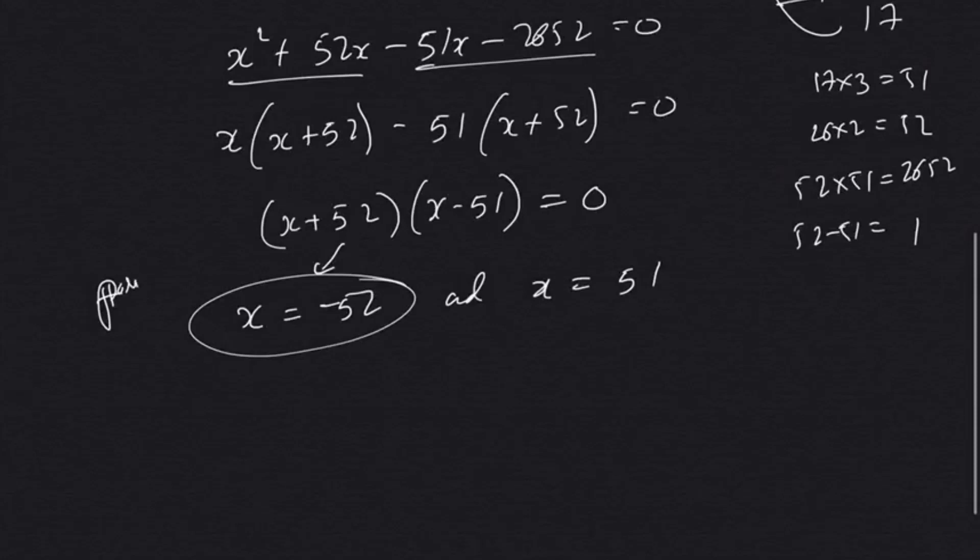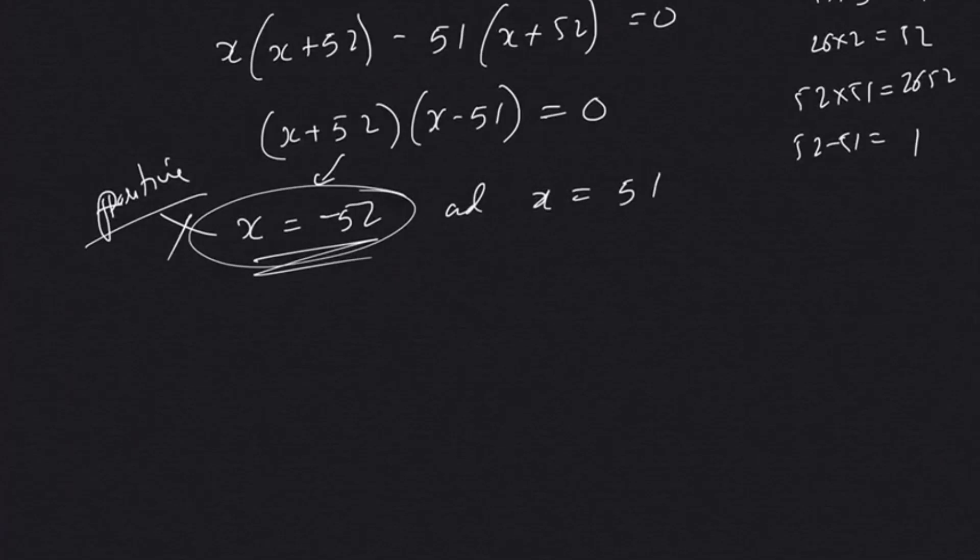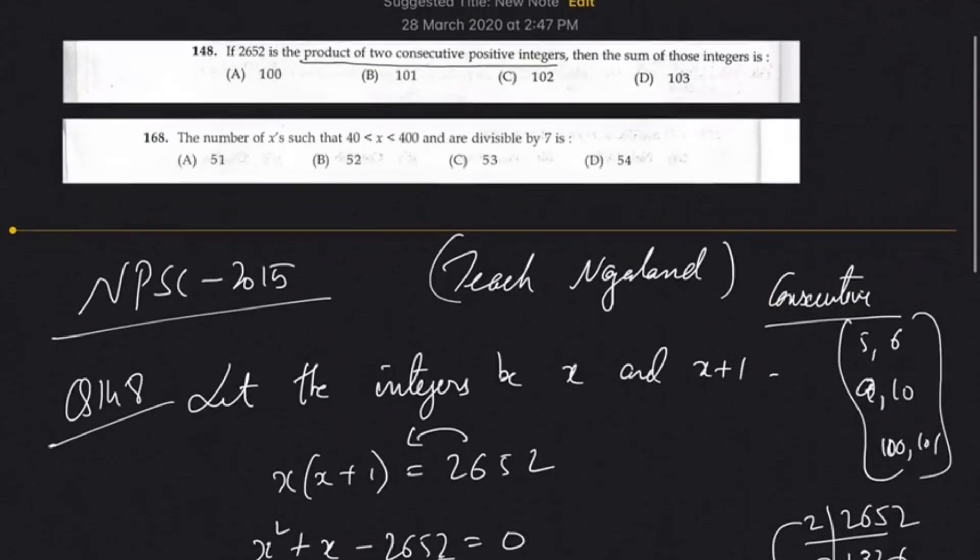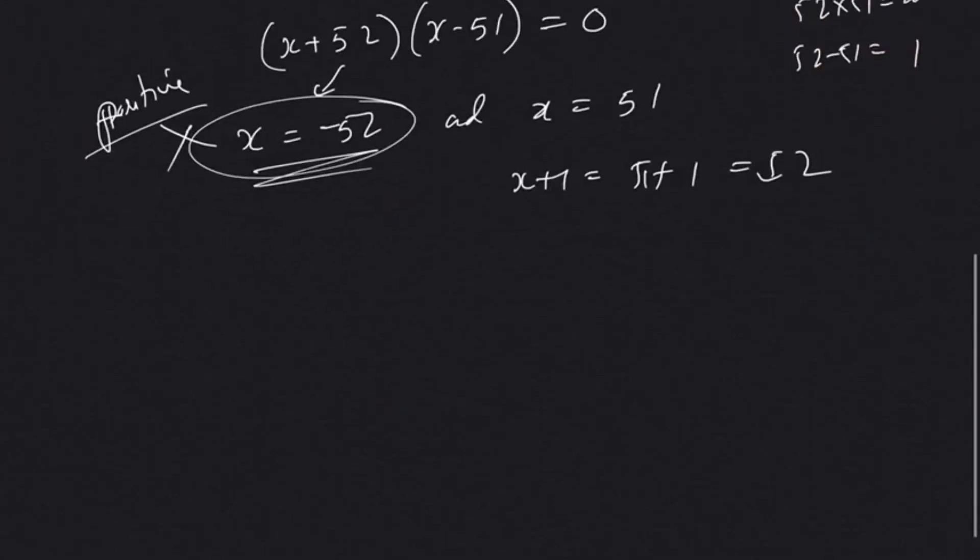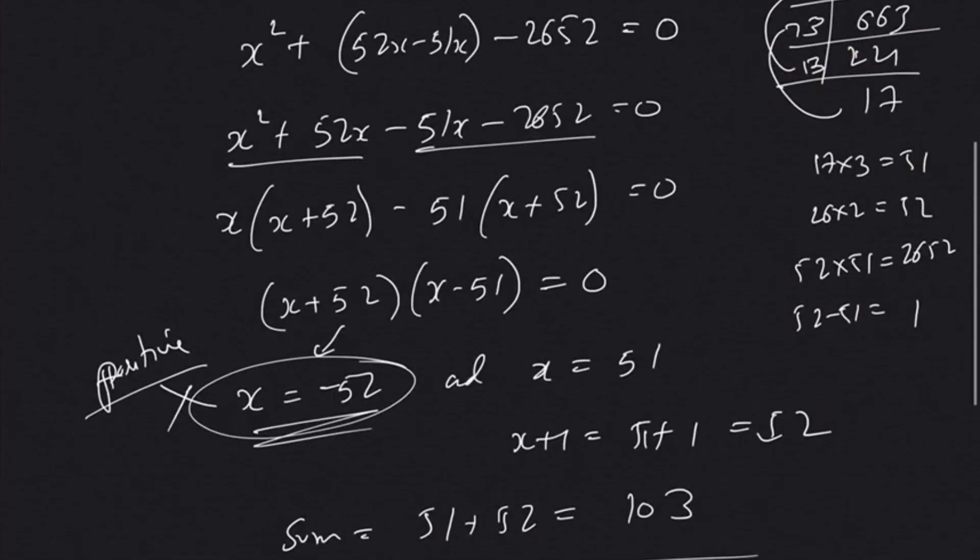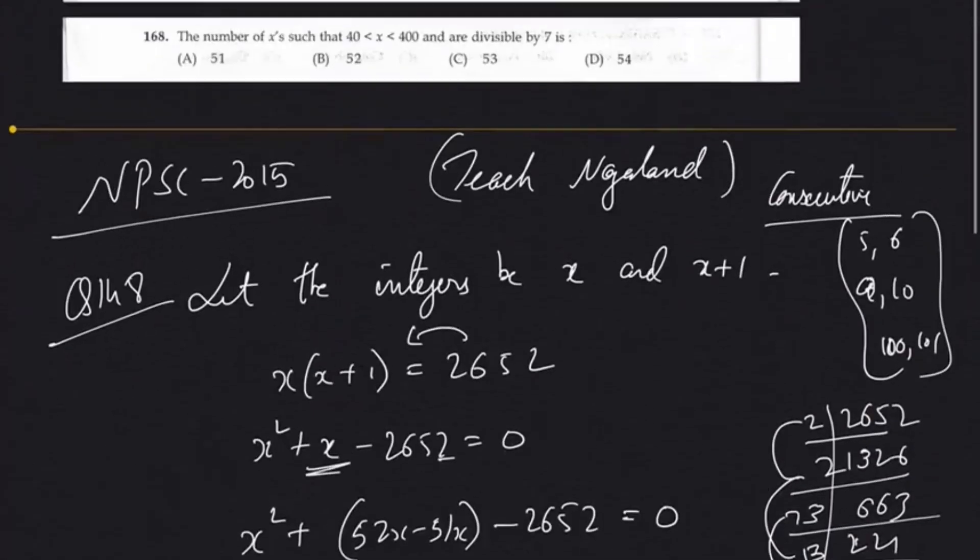Our values of x are: one will be -52 and the other will be +51. Since it is stating in the question positive, we will not be using -52. So one number is 51, the other number will be x+1, that is 51+1 = 52. Now the question is sum of those integers. So our integers are 51 and 52. If we add those, 51 and 52 is going to be 103. Option D will be our answer.